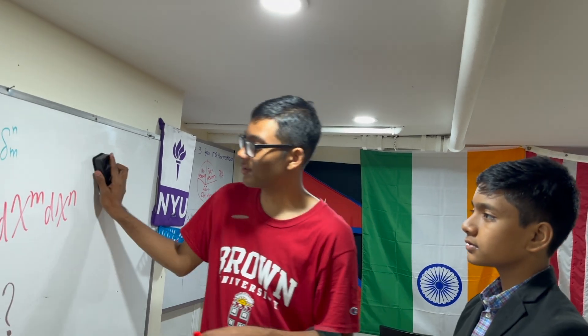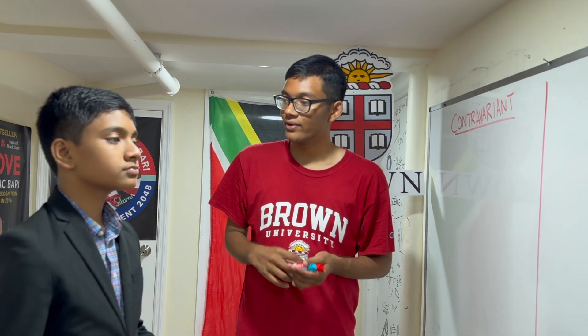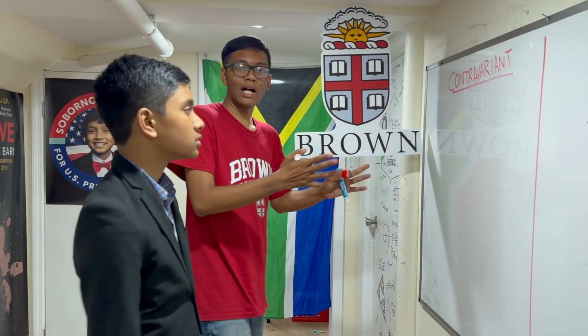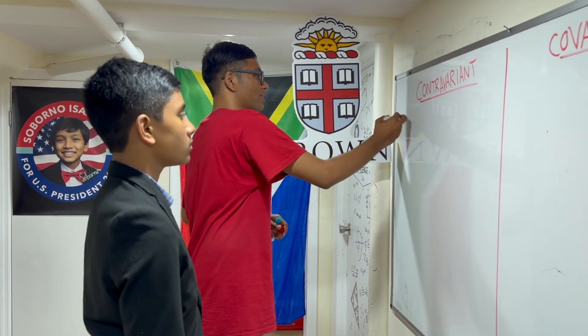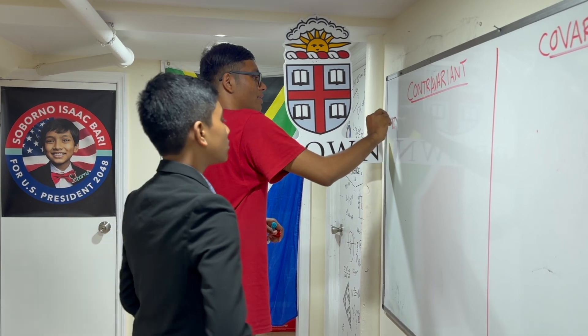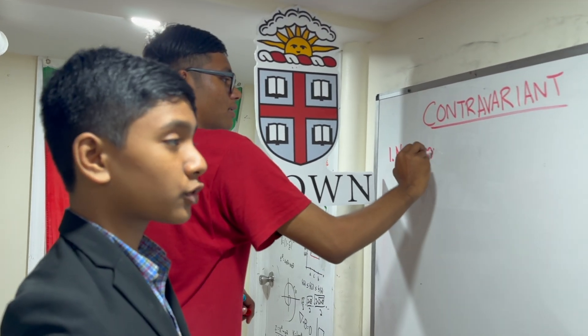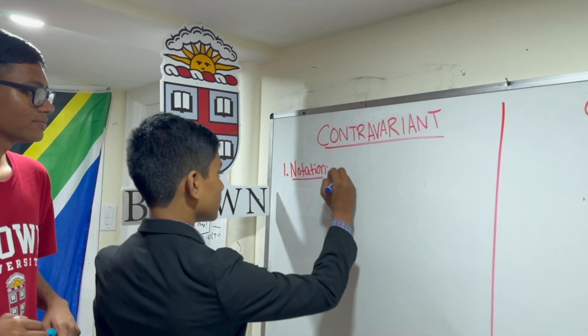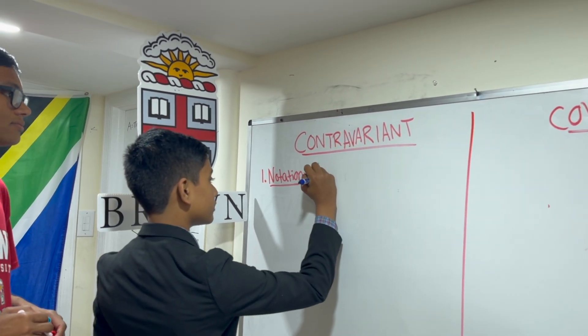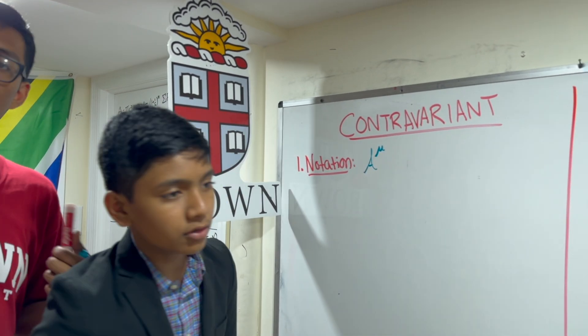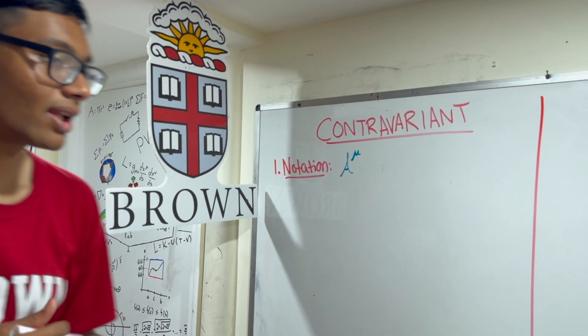Two main types of vector components. First, let's start with contravariant vector components. First, let me talk about their notation. We just notate them with a superscript. For example, if we have a tensor A, a contravariant vector would be notated as A with a mu superscript.